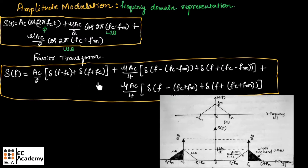Before writing the spectrum of the AM signal, let us write the spectrum for the message signal. This is the spectrum for the message signal with amplitude AM/2, with center frequency at 0, frequency towards the right side at Fm, and towards the left side at minus Fm. Now this is the spectral representation for the AM signal.